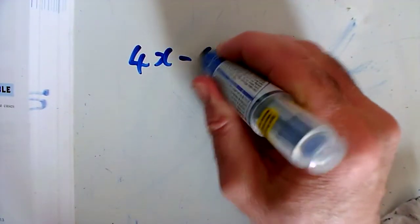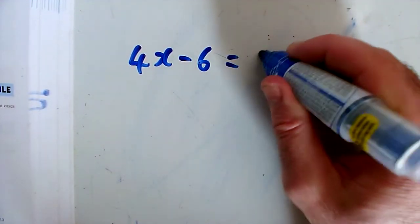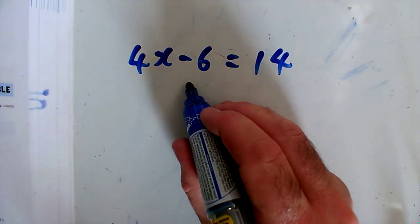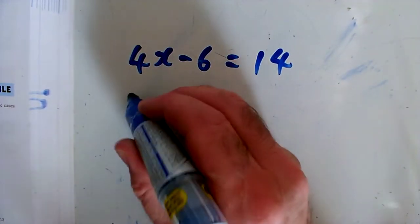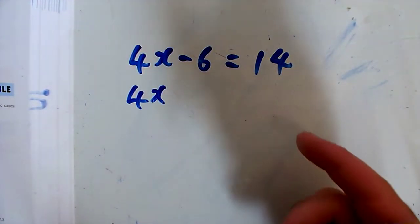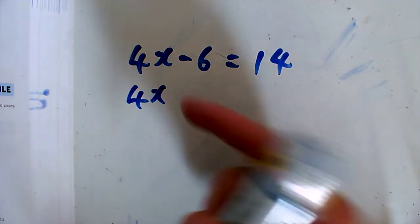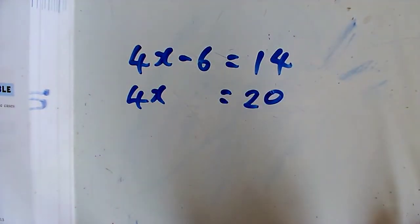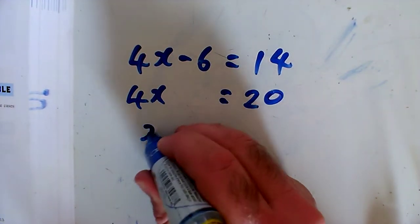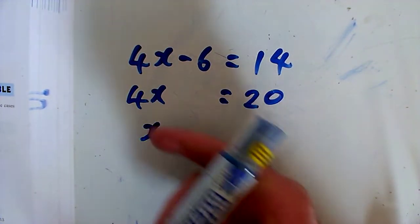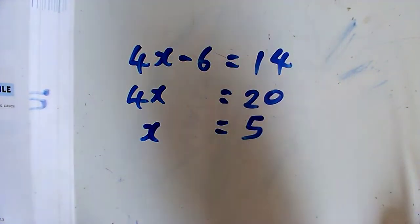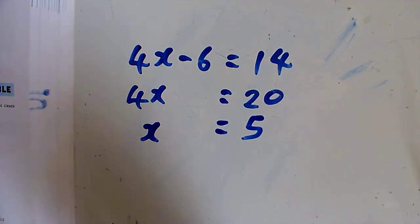Question J: 4x minus 6 equals 14. I want to get rid of the minus 6, so I'm going to add 6 to both sides to cancel it out. Adding 6 to both sides, 4x equals 20. To get a single x on its own, I divide by 4, so x equals 5.